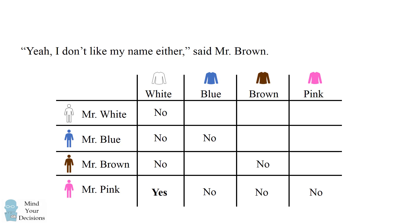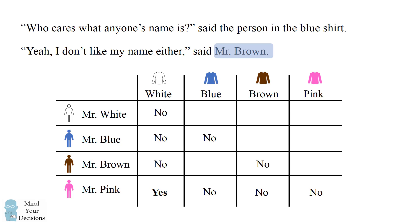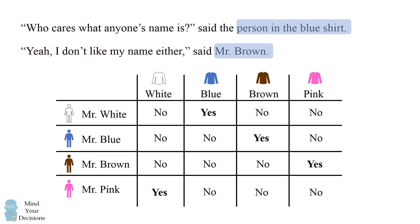We have one more statement from Mr. Brown, who says he doesn't like his name either, in contrast to the person in the blue shirt who doesn't care what anyone's name is. This implies that Mr. Brown is not wearing a blue shirt. By process of elimination, this means Mr. Brown is wearing a pink shirt, and Mr. White is wearing a blue shirt, so we can eliminate that anyone else is wearing these shirt colors. And that leaves Mr. Blue wearing a brown shirt.